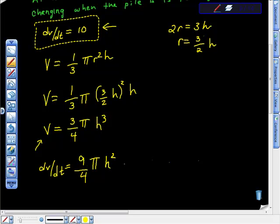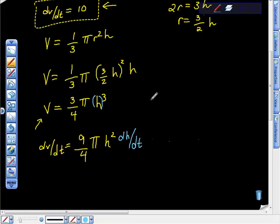So there's my nine-fourths pi h to the third. This gets decremented, so this goes to h squared. But remember, please, because this is where people get thrown off, I have to take the derivative of this inside piece, and the derivative of h with respect to t is, frankly, the derivative of h with respect to t, which is dh/dt.